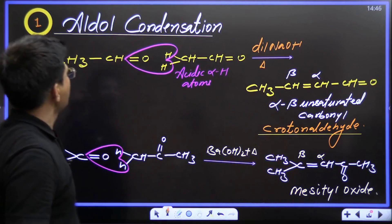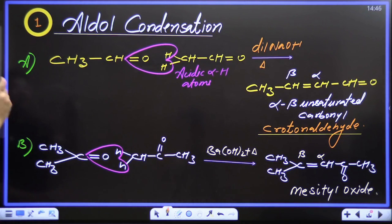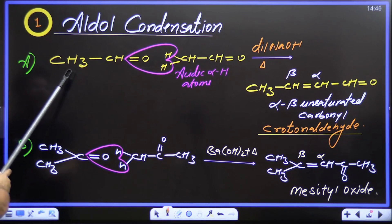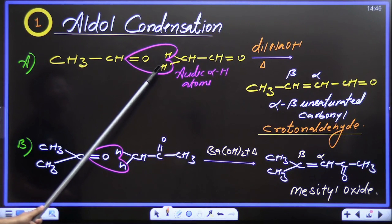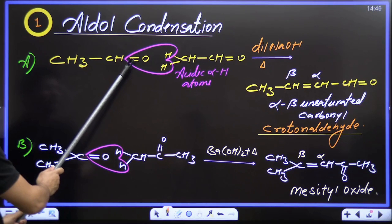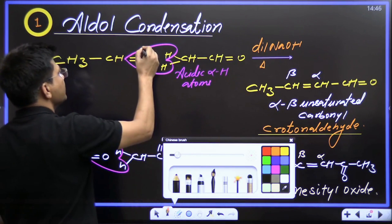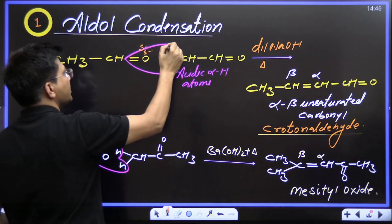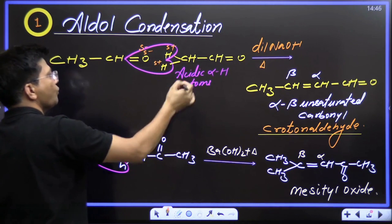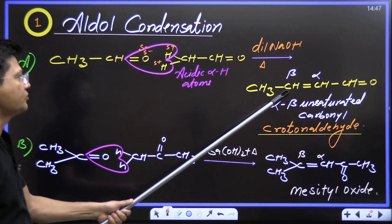The first name reaction is aldol condensation. In aldol condensation, this aldehyde with acidic alpha hydrogen atoms — at least two acidic alpha hydrogen atoms are required for condensation: one for formation, one for condensation. From one molecule, you remove oxygen (delta negative) and these two hydrogens (delta positive), so water gets eliminated and you get the alpha, beta unsaturated product.